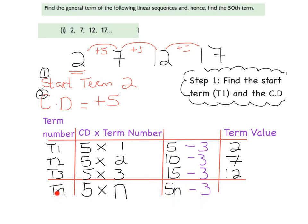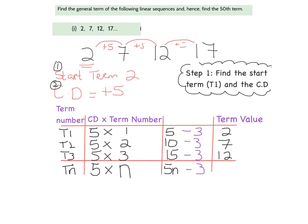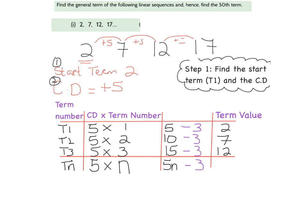Whatever number I'm looking for, whatever term I'm looking for, I just use this formula, 5n minus 3. So I'm going to make this a little bit smaller, give myself a little bit more room. The question up at the top here said, find the general term. To find the general term, step one, I find the start term and the common difference. And step two is I lay my table out and fill it in correctly. What you should be left with at this point is your general rule, which is this bit here, 5n minus 3. That's going to help me find whatever term I wanted. So term one, term two, term three, term four, I can find them all using this general rule. And in this case, the question asked me to find the 50th term.